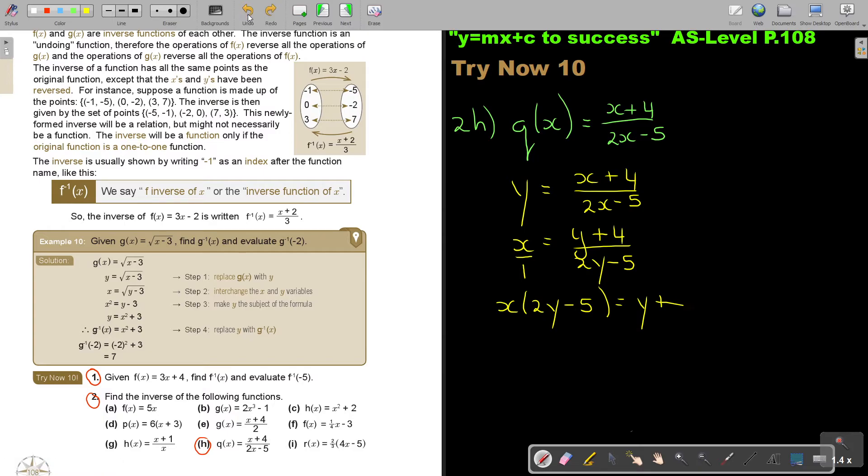So, I'll get X times 2Y minus 5 equals Y plus 4. Then, it's going to be 2XY minus 5X equals Y plus 4. Expand the brackets out. Now, take all the terms with Y to one side. And then, take Y out as a common factor.